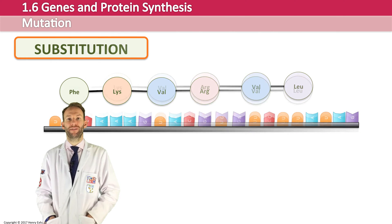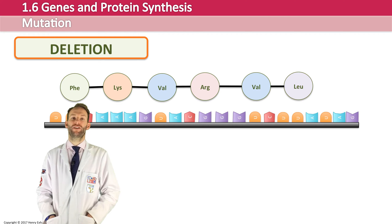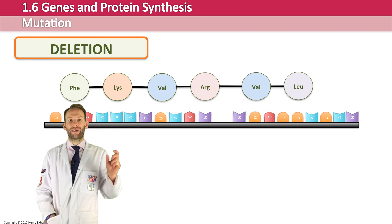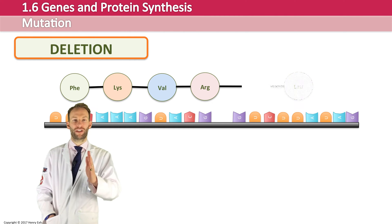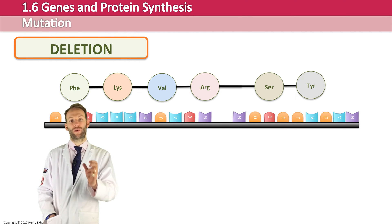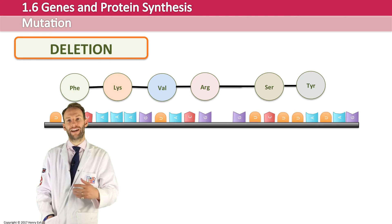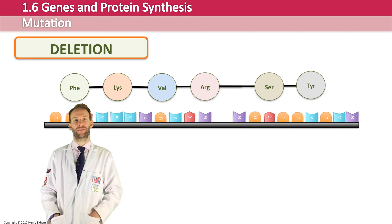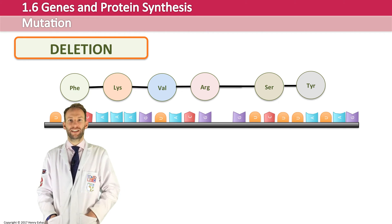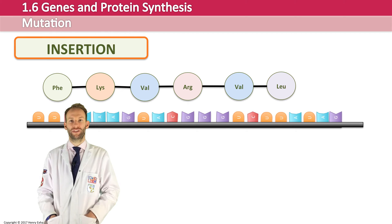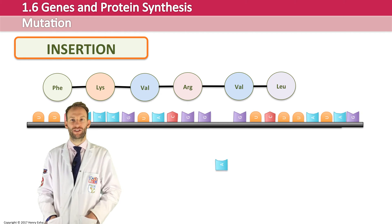Deletion is when a base is removed from the sequence. This can be very serious because depending on how far into the gene this occurs, all the amino acids from that point on are going to be different — they're all shifted up one position, so every codon after that point is different, giving a completely different amino acid sequence. Insertion — adding an extra base — can also be very serious, as it changes all the amino acids from that point onwards. This is called a frameshift mutation.